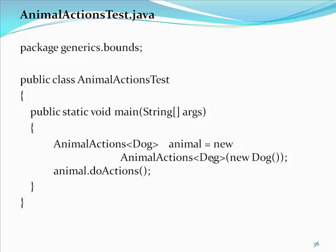In the above code, a new instance of dog object is created and passed onto the constructor of the animal actions class. This is perfectly valid as the dog class extends the animal class and it also implements sleepable, eatable and runnable interfaces.